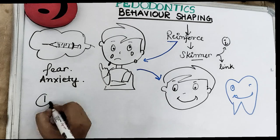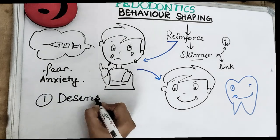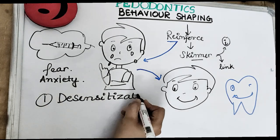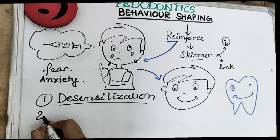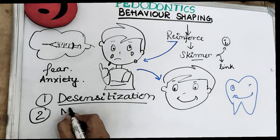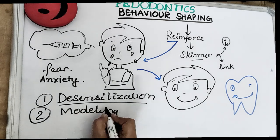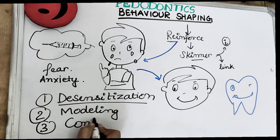Behavior modification involves three techniques: desensitization, modeling, and contingency management. So let's start with desensitization.